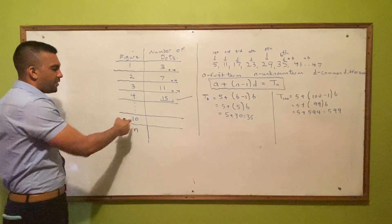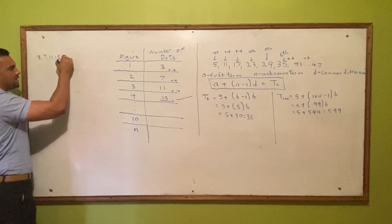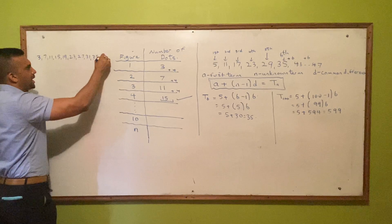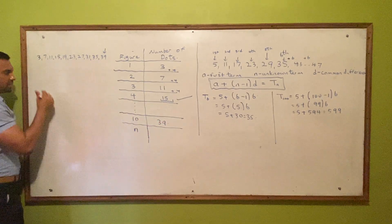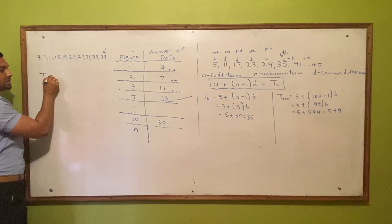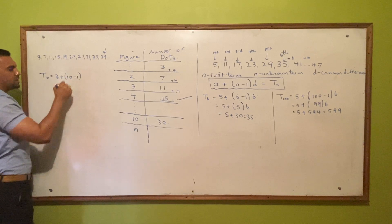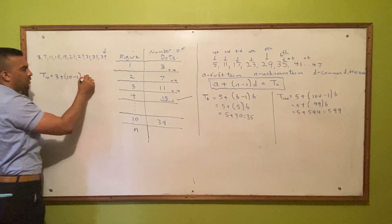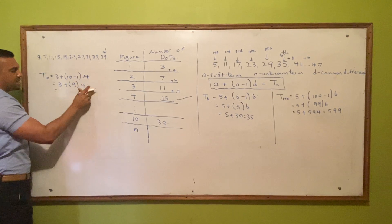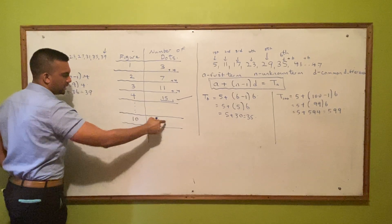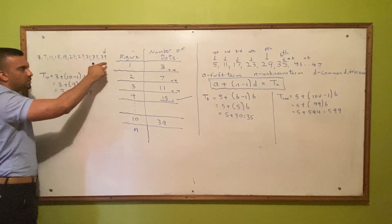If you want to find the tenth term, there are two ways. You can list out the numbers: 3, 7, 11, 15, 19, 23, 27, 31, 35, 39 — that's the 10th term. Or you can calculate it. t10 = a + (n - 1) × d, where a is 3, n is 10, and d is 4. Simplifying: 3 + (10 - 1) × 4 = 3 + 9 × 4 = 3 + 36 = 39.